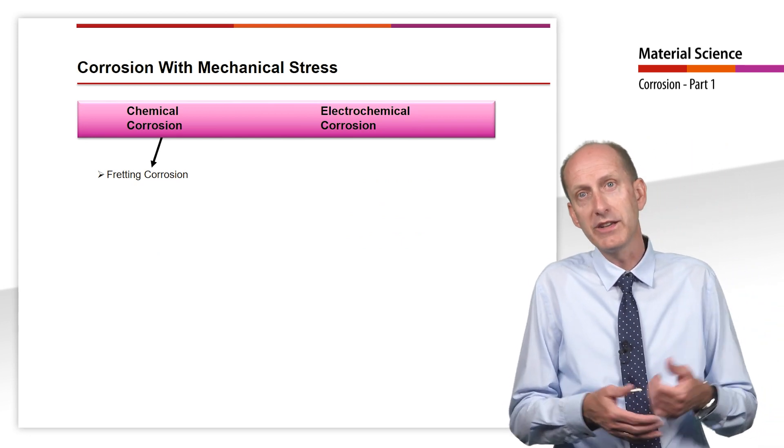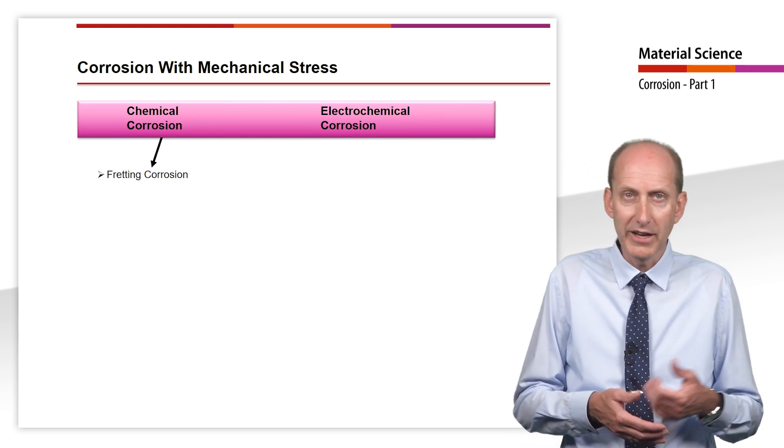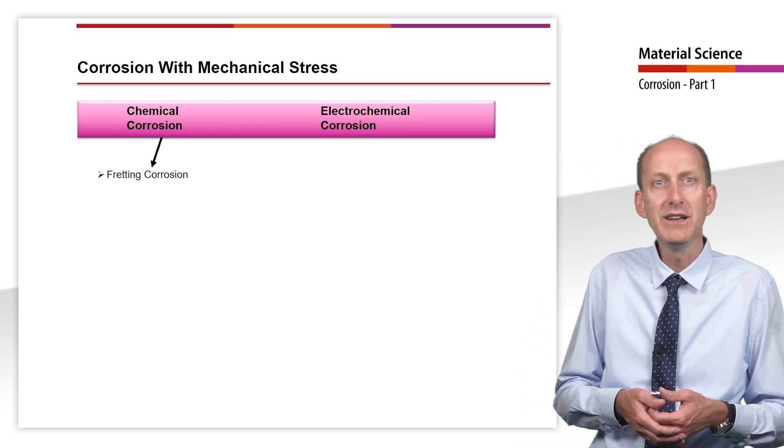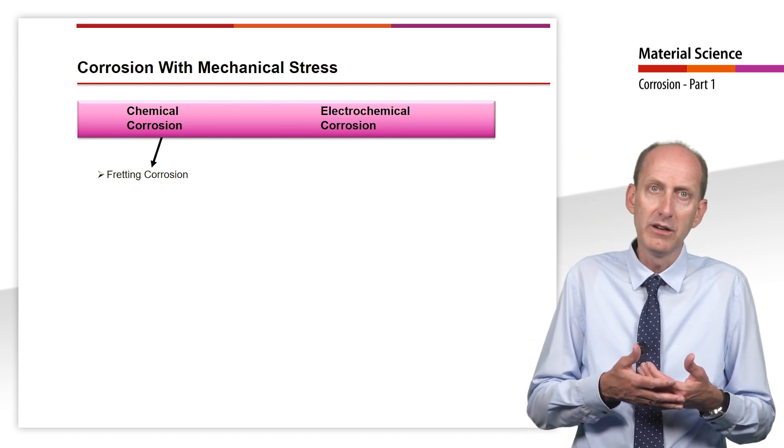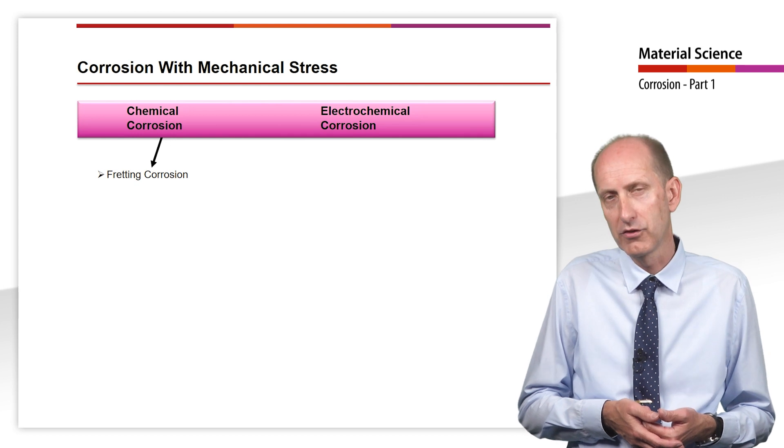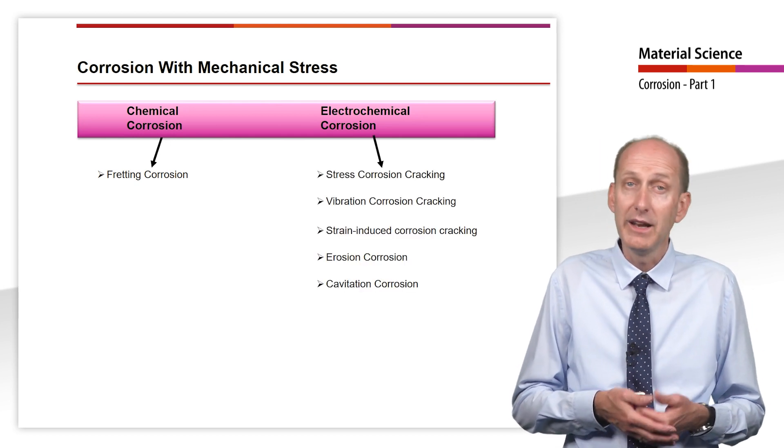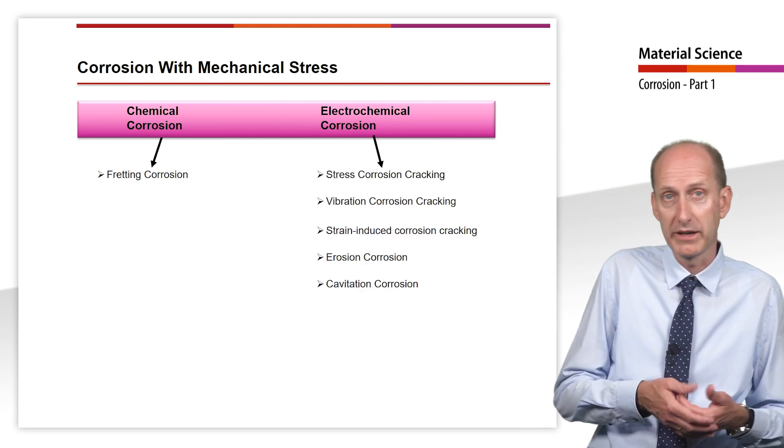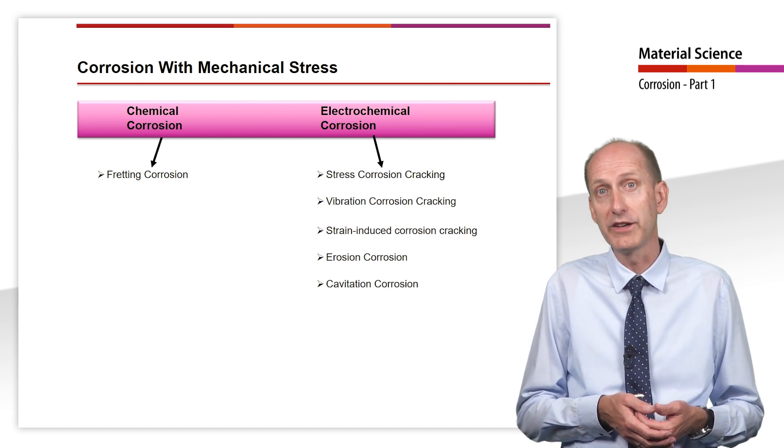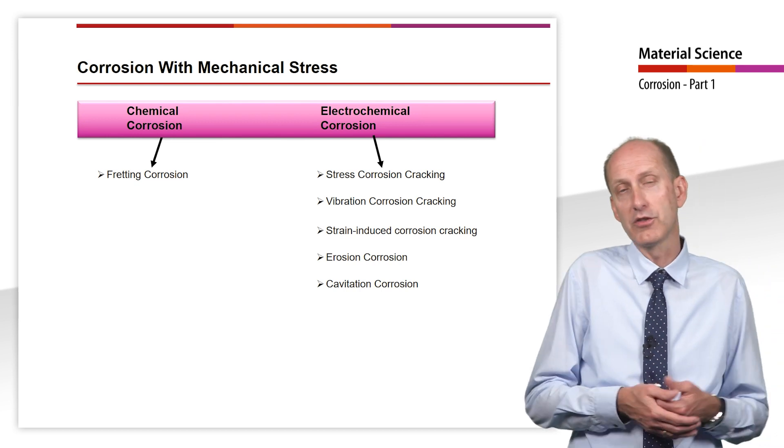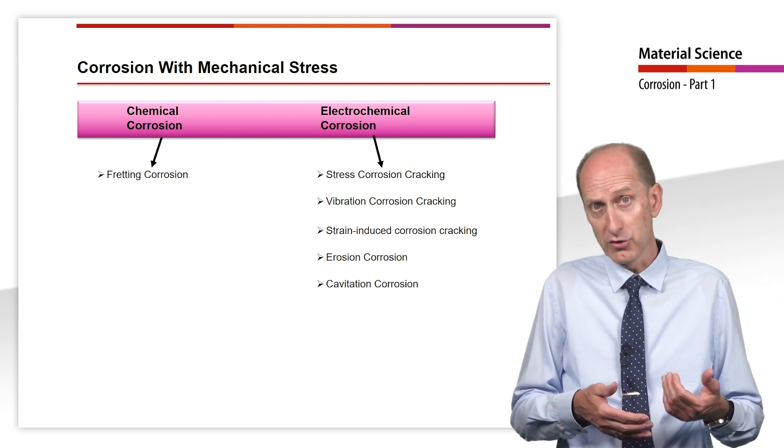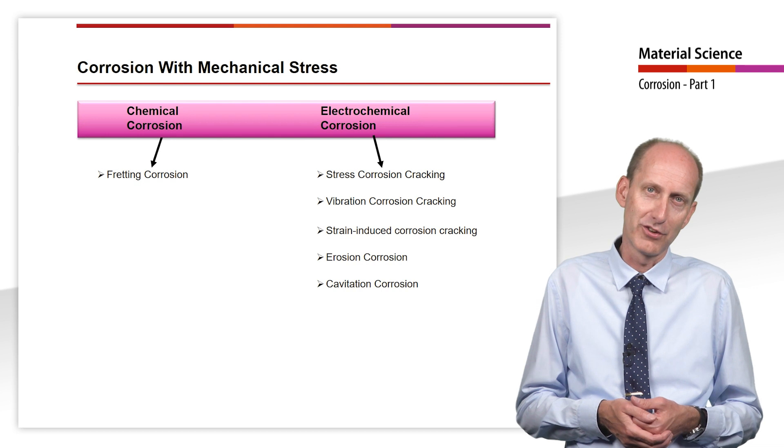As chemical corrosion under mechanical stress, mainly fretting corrosion is to be mentioned. In the case of fretting corrosion, it is mainly the surface particles that are removed by mechanical wear due to friction that are corroded. Electrochemical corrosion with mechanical stress includes stress corrosion cracking, vibration corrosion cracking, strain induced corrosion cracking, erosion corrosion and cavitation corrosion.